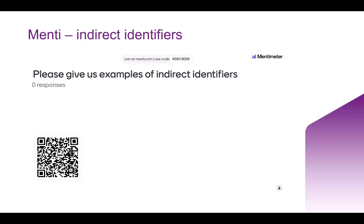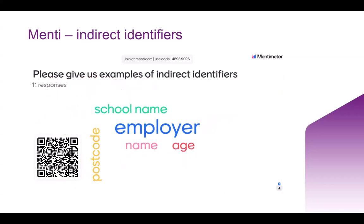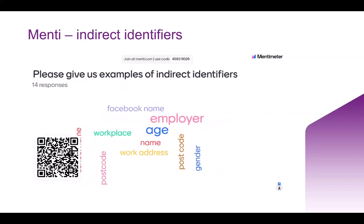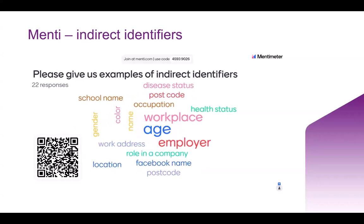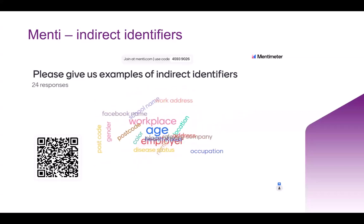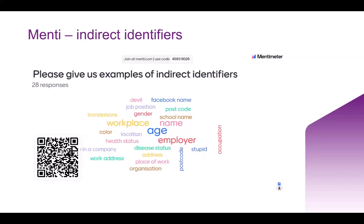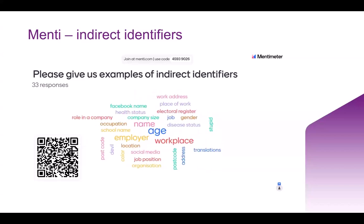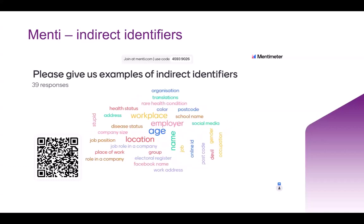Now if you can pop in some examples of indirect identifiers. Your name is one of the funny ones — depends a little bit on the name. But absolutely could be your employer, a Facebook name — though a Facebook URL might be a direct identifier. A job position might depend on the job; if you're a football coach for Ipswich Town in 2024 you're likely to be identifiable, but just a football coach is a much broader pool.